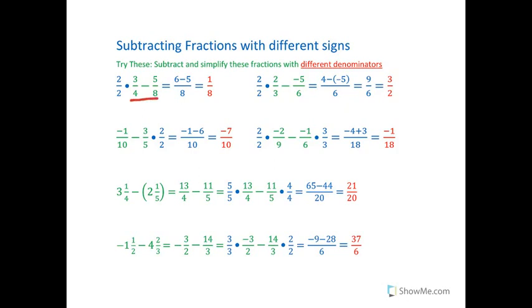Here's my original problem here. Three-fourths minus five-eighths in green. Multiply two over two times three-fourths, and I'm going to get six-eighths take away five-eighths is one-eighth.